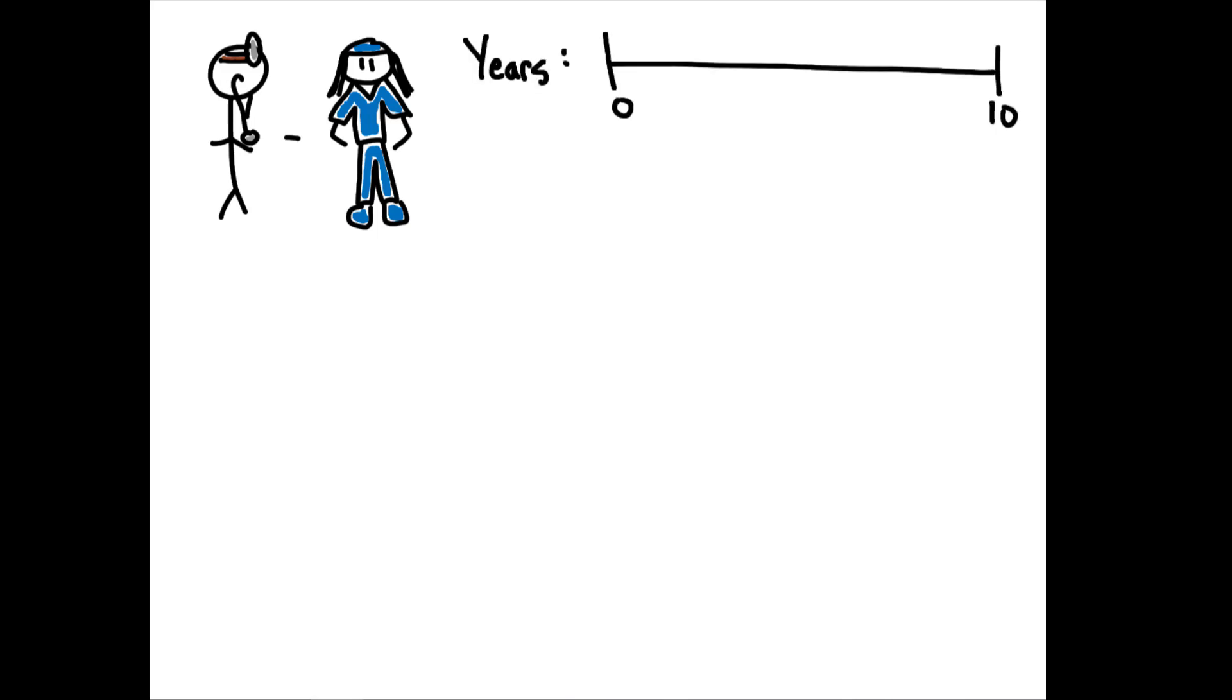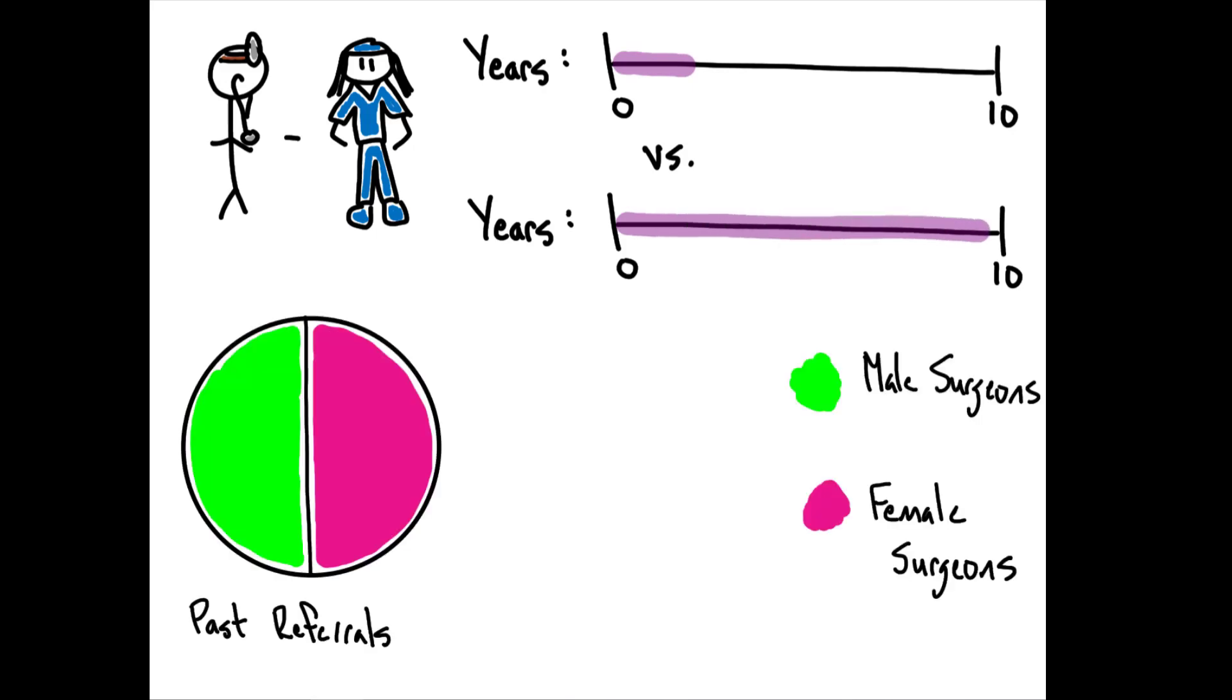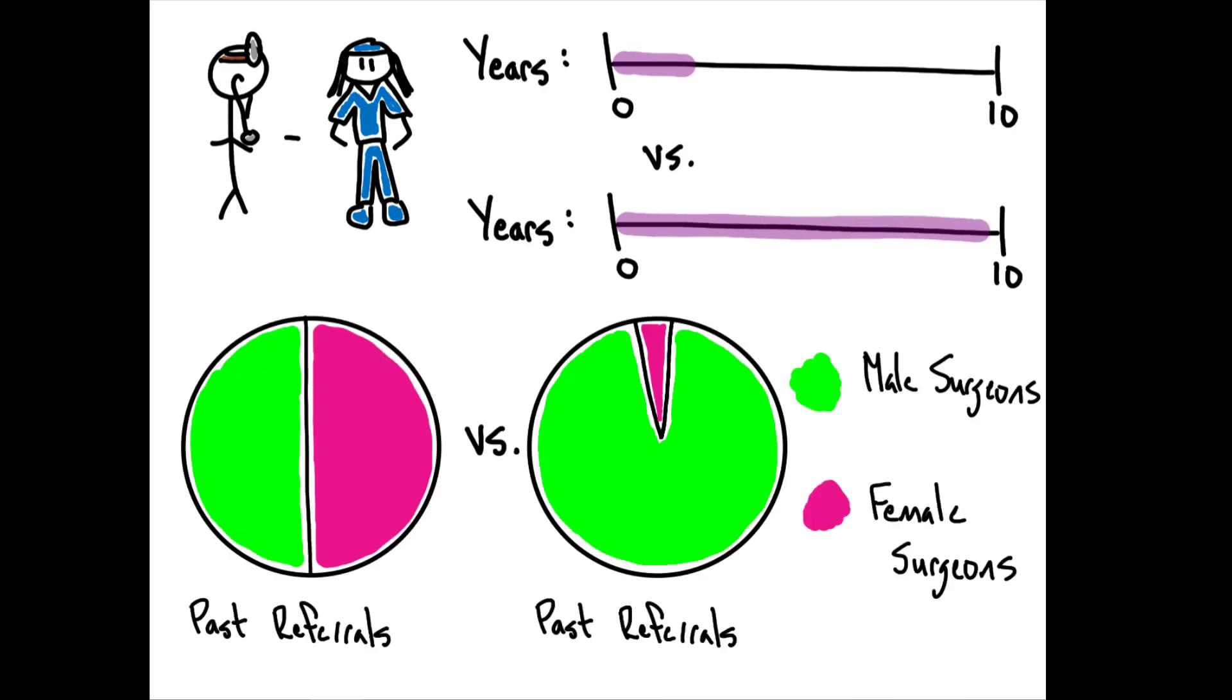The author does find that certain factors appear to reduce the extent of asymmetric updating. Doctors react less strongly to individual events and treat male and female surgeons more equally the longer their referral history with a particular surgeon is, and if they have had more experience working with female surgeons in the past.